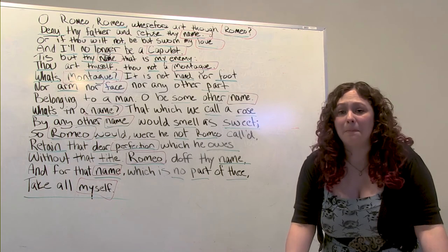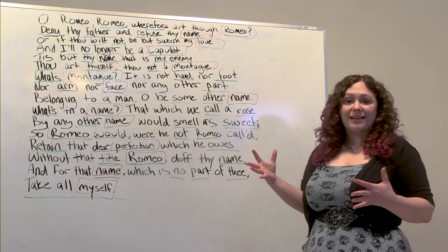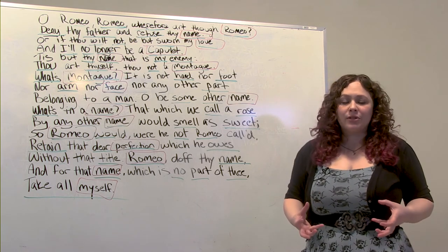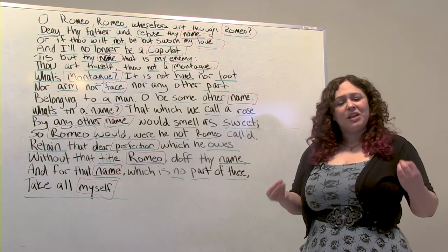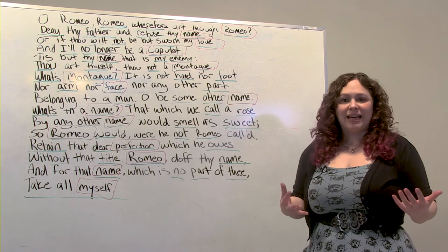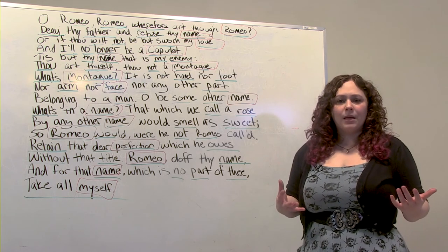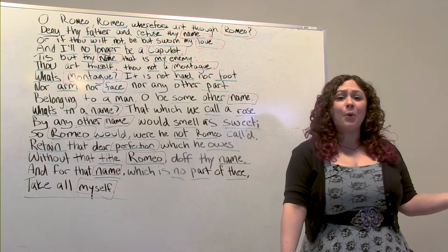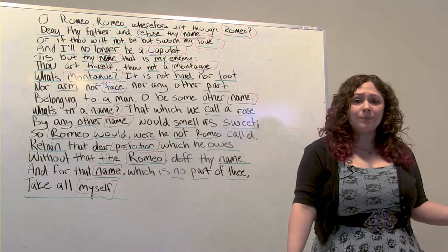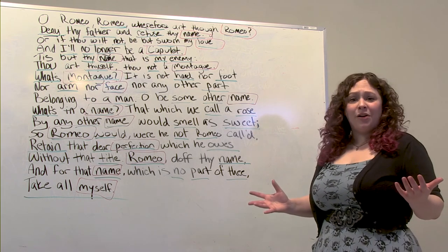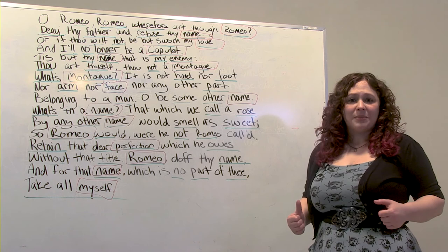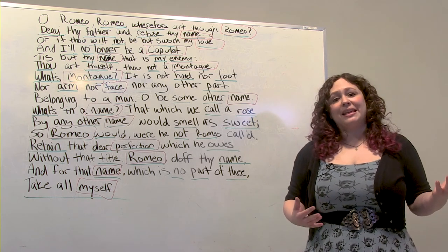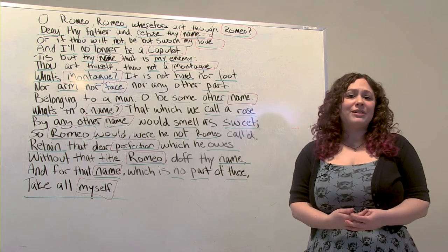This method of breaking down text is really fantastic for figuring out a character's objective, but it's also great if you're having trouble understanding anything — because every time you take it into smaller chunks it automatically becomes more manageable. I want to thank you all for breaking down a little bit of text with me and looking at some Romeo and Juliet. My name is Kim Douthit and I hope you have a wonderful day.